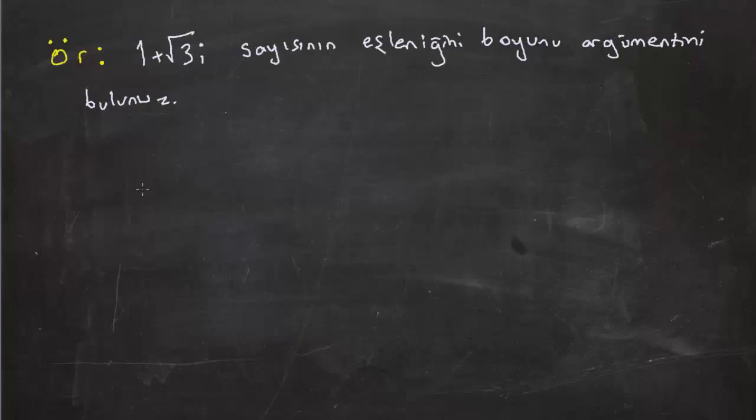Şimdi isterseniz karmaşık düzlemi bir çizelim. Karmaşık düzlemde real ile 1'i, sanalda kök 3'ü işaretledikten sonra, ilk başta bana bu sayının eşleniği sorulmuş. Eşlenik real eksene göre olan simetriydi. O da buraya gelir, eksi kök 3 olacak burası.